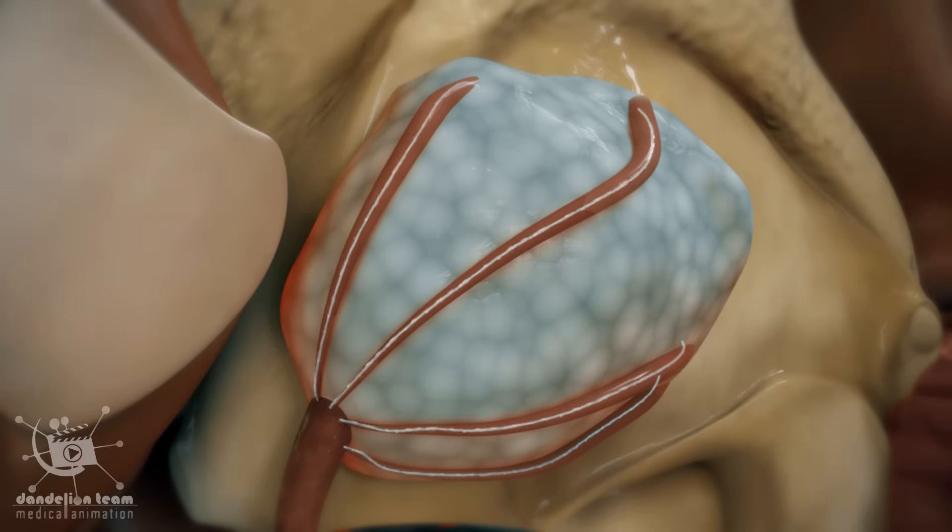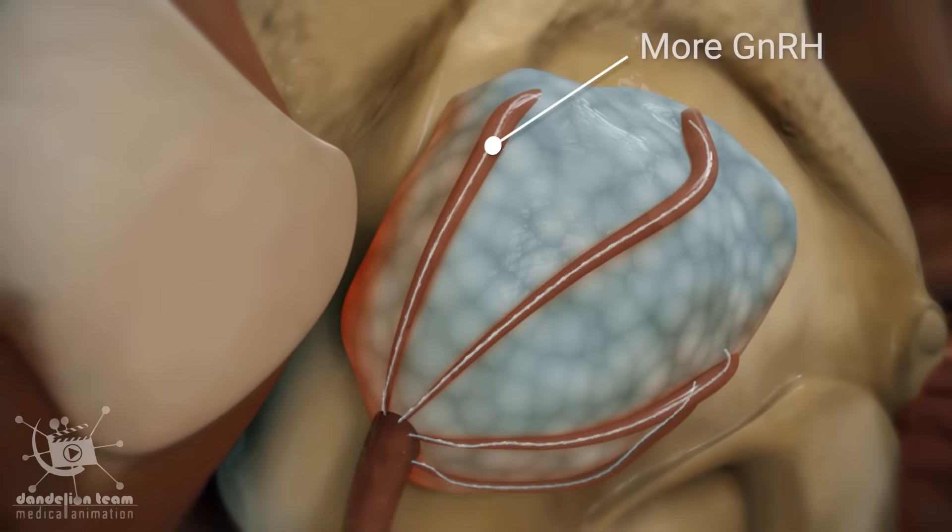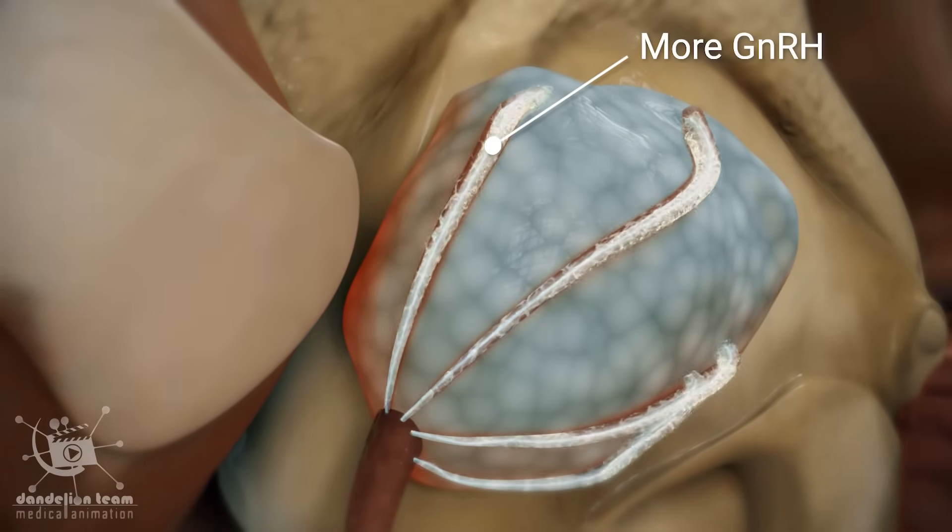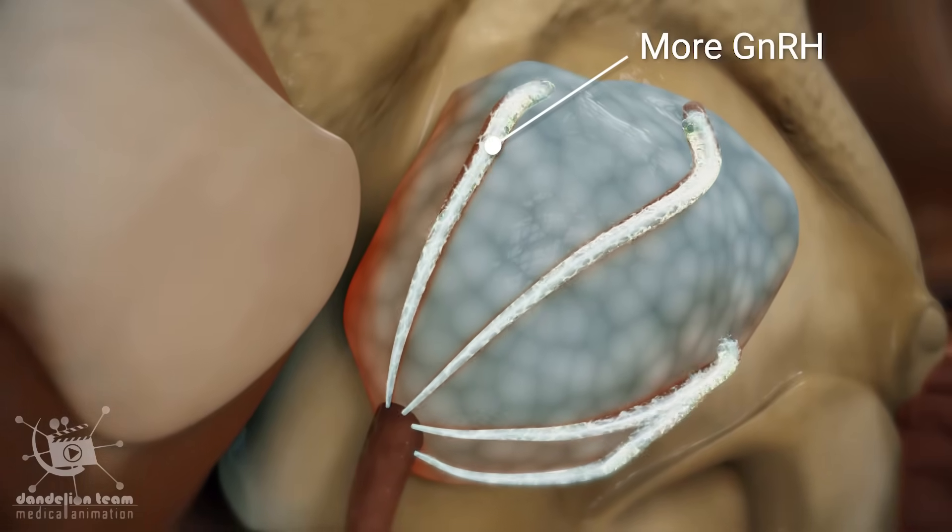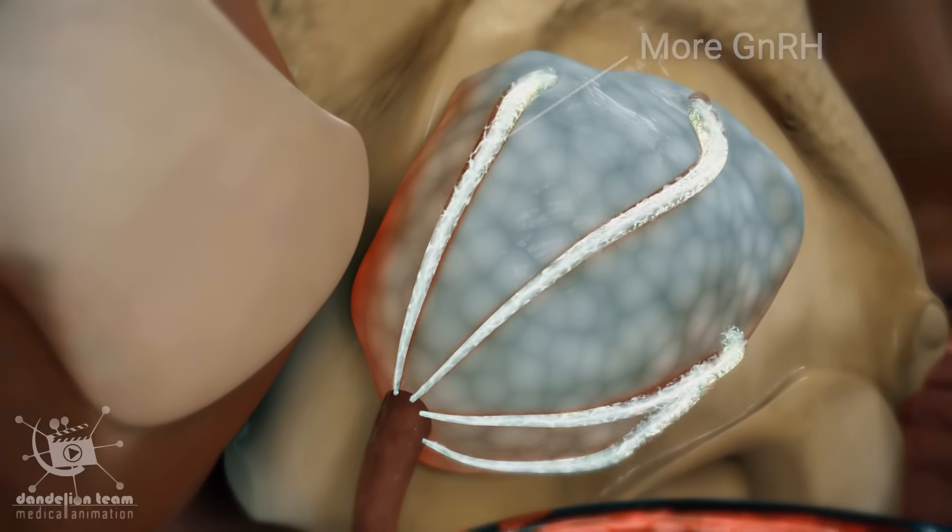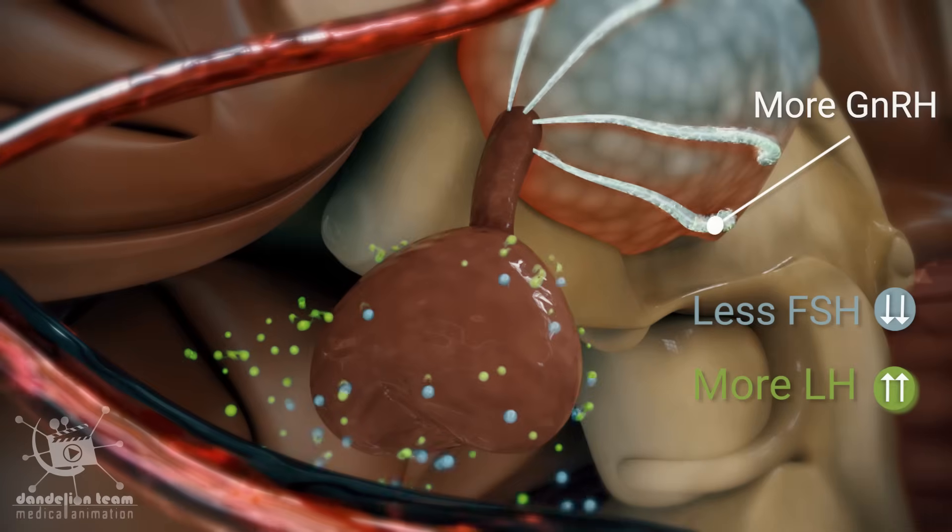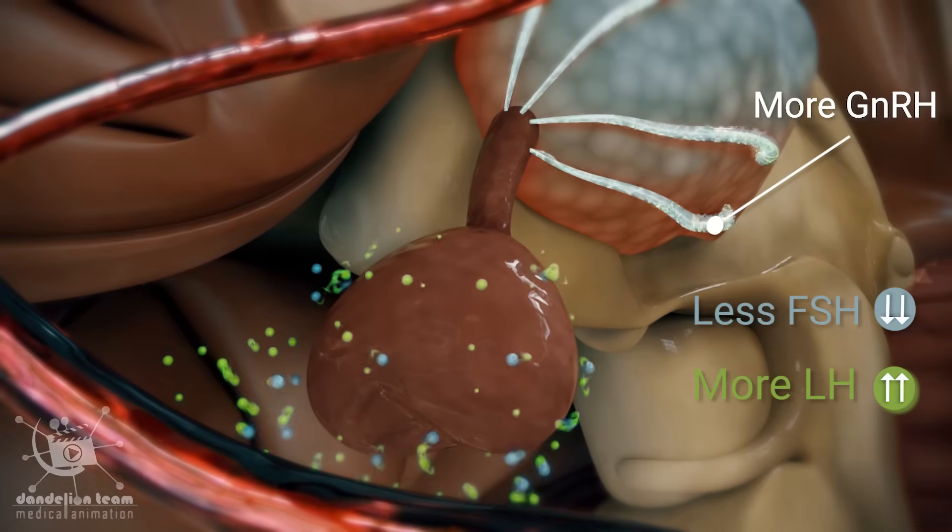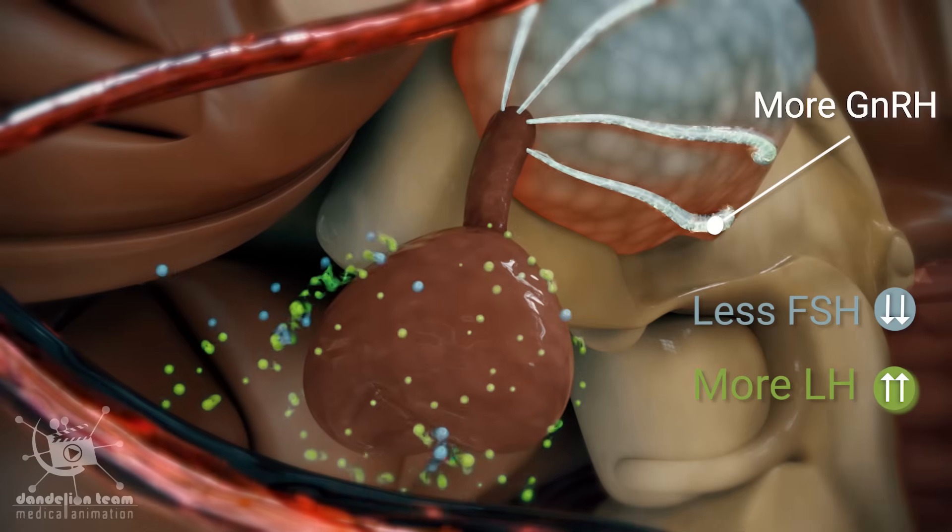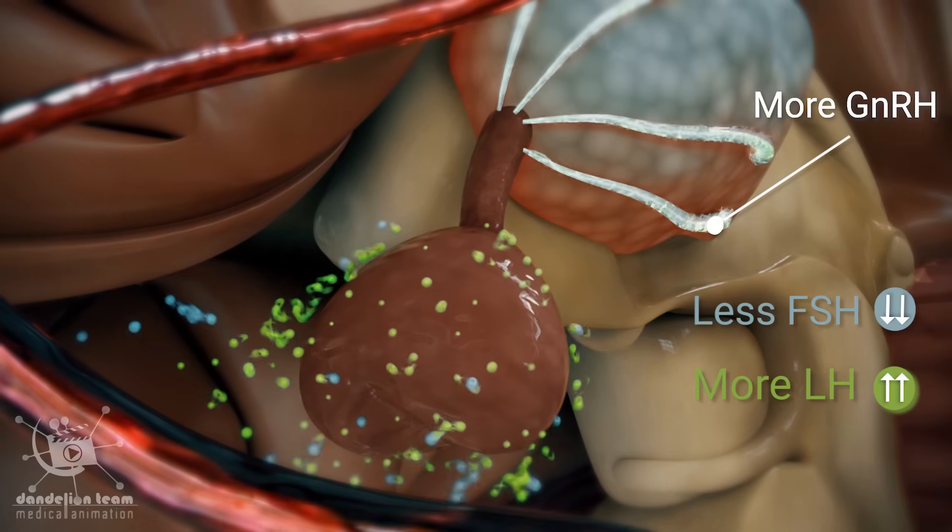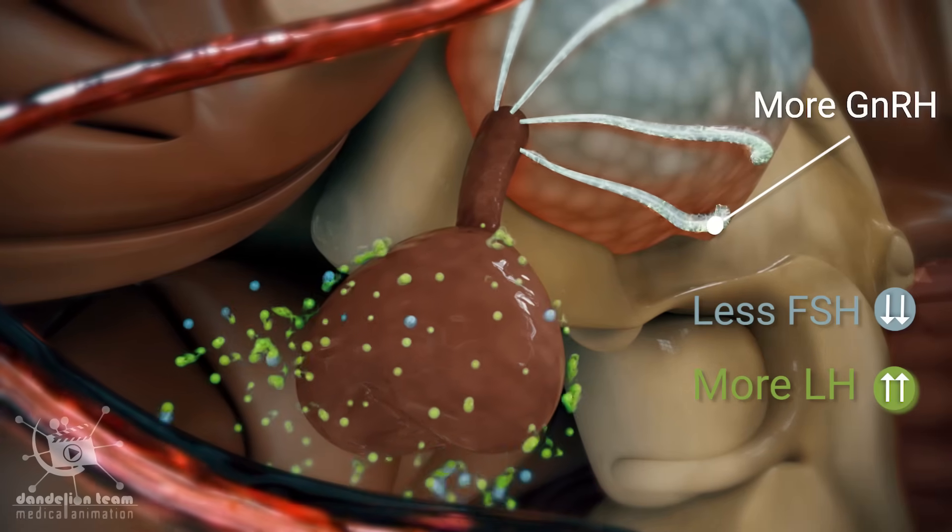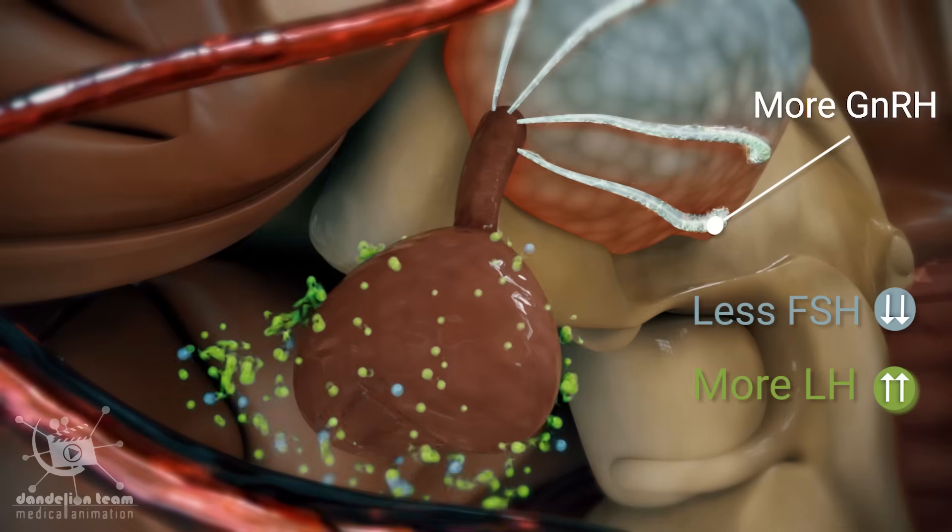One of the primary abnormalities in PCOS is the abnormal release of GNRH. Instead of being released in a regular cyclic manner, for an unknown reason it is released at a higher pulse frequency. This increased pulse frequency leads to an increase in LH over FSH.